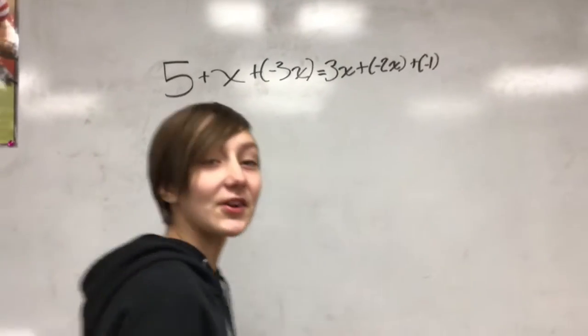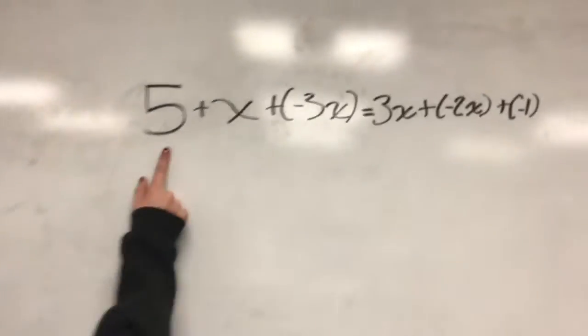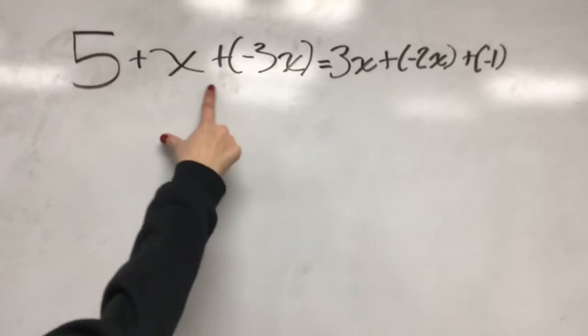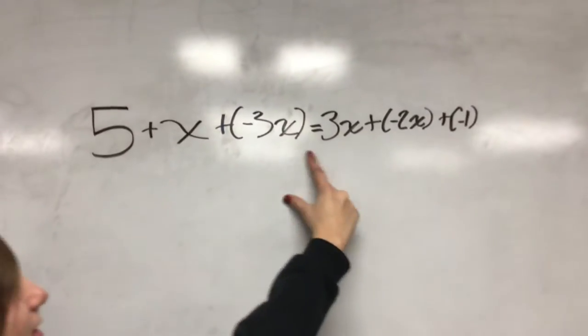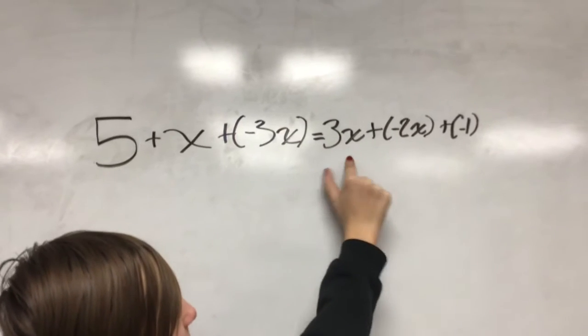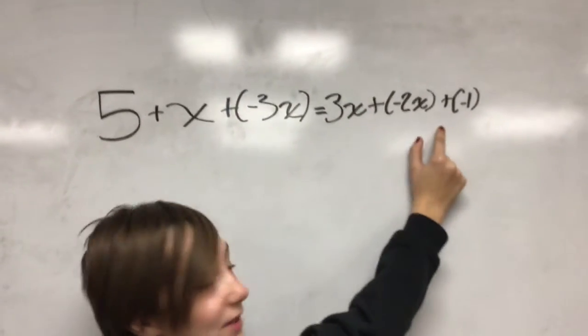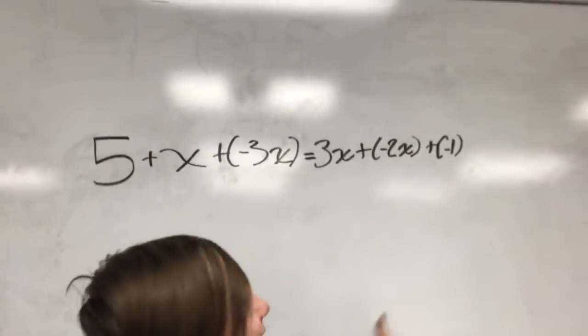So now we're going to do our third problem. 5 plus x plus negative, or not negative 3x, the opposite of 3x equals 3x plus the opposite of 2x, so x plus negative 1. So we have our problem set up right here.